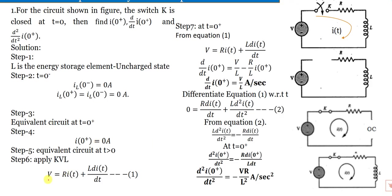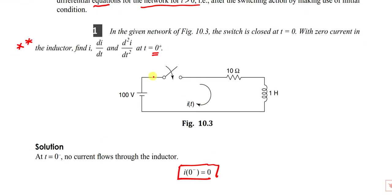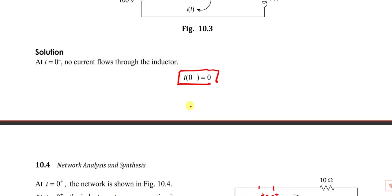Write KVL: applied voltage V = R·i(t) + L·di/dt. At t = 0⁺, substitute to get di/dt at 0⁺. To find d²i/dt², differentiate once more — L·di/dt becomes L·d²i/dt². Substitute and you get the general expression: di/dt = V/L amperes per second, and d²i/dt² = −VR/L² amperes per second squared. Normally the values are directly given, so you can follow this method.